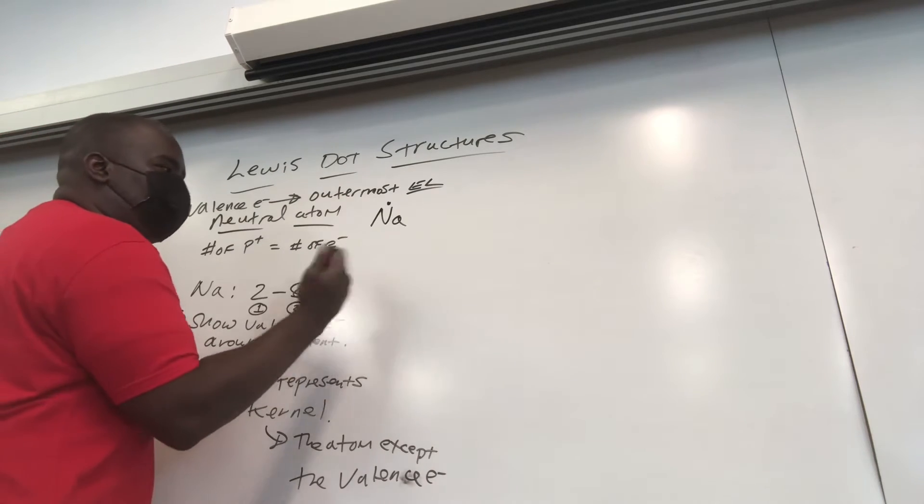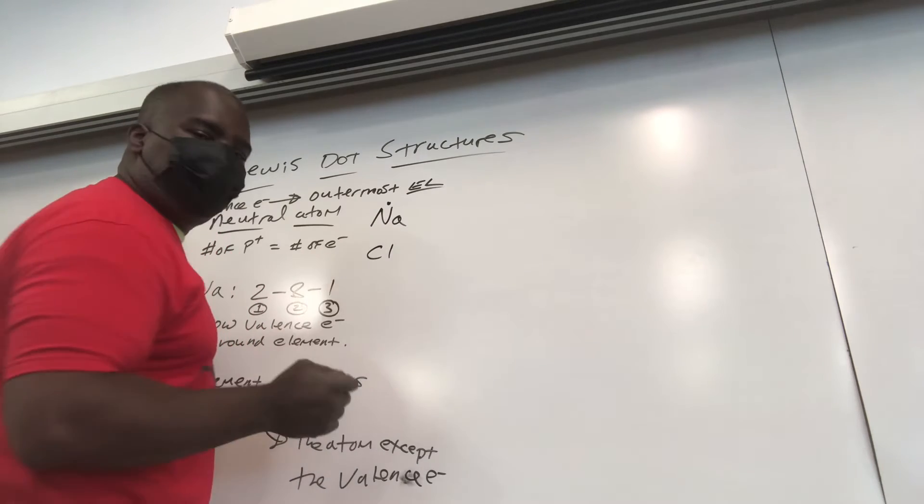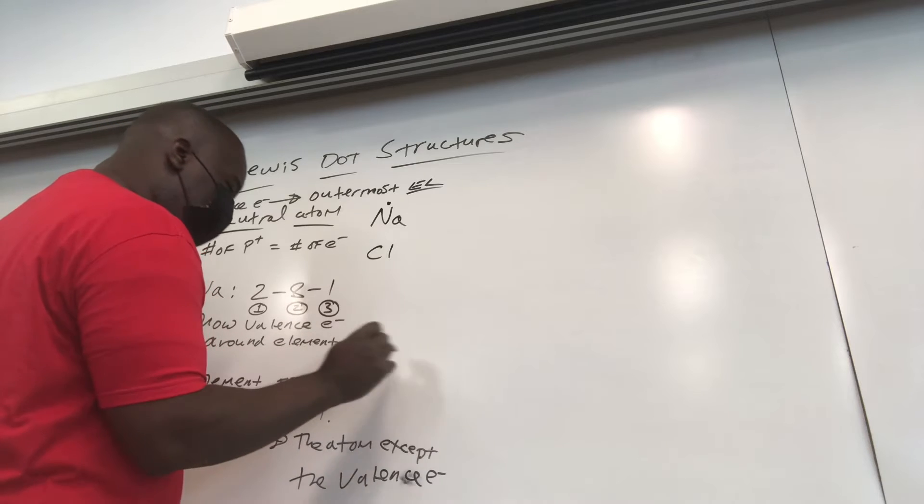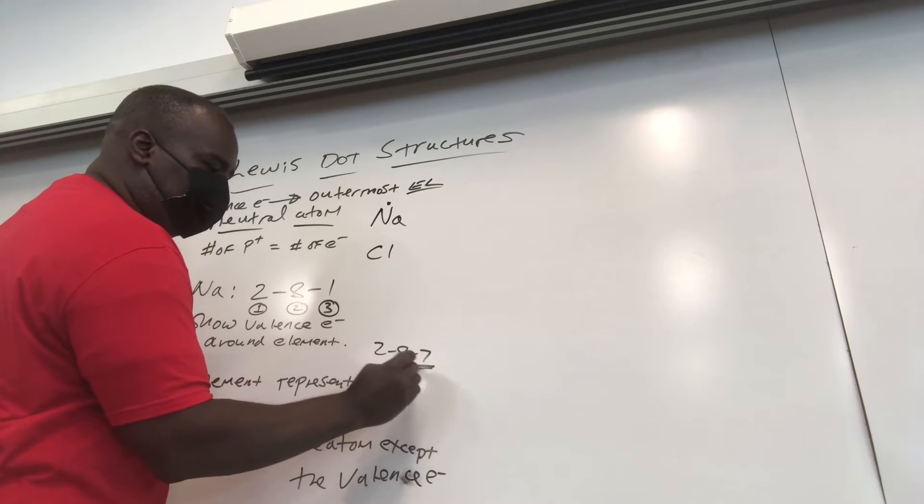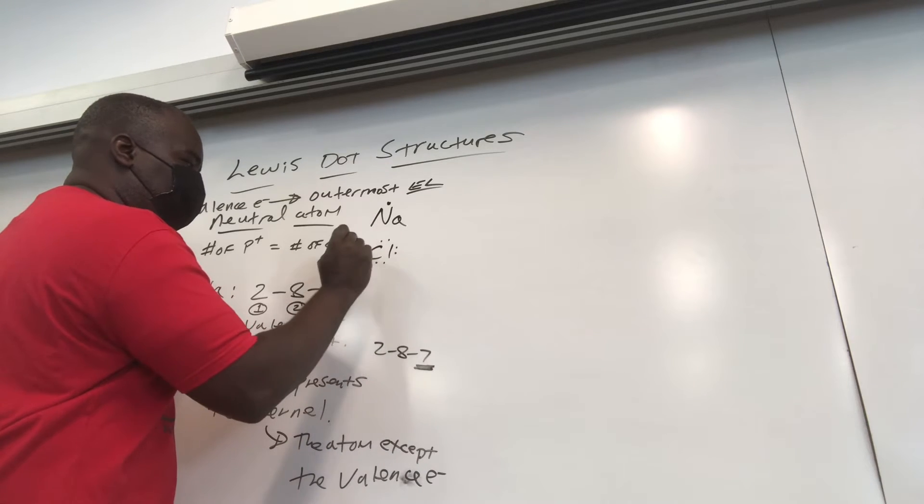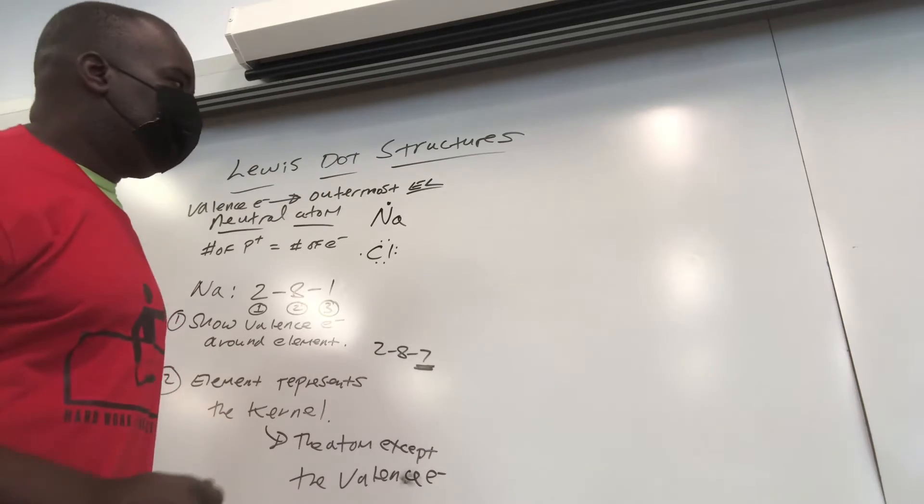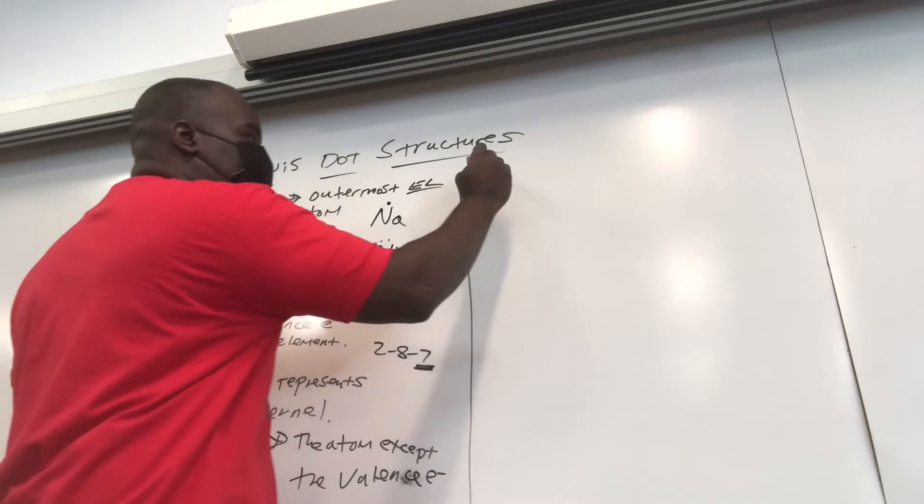So as long as you know the outermost energy level represents the valence electrons. For example, if they ask you to do something like chlorine, you look at your reference table, you notice that chlorine is 2-8-7. That's 7 valence electrons in the outermost shell, it gets 7 dots. So neutral atoms, very simple, no problem. So let's move on.